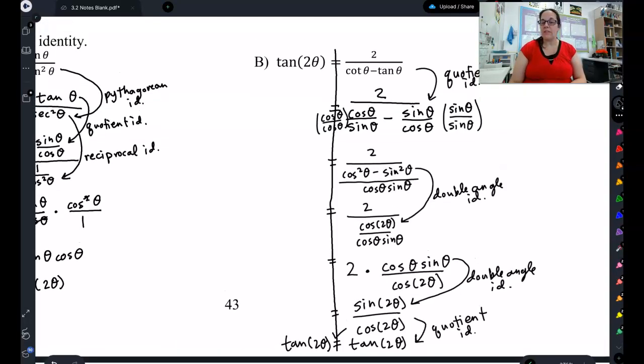So there's another example of a trig identity. In the next video, we're going to move on from double angle identities and start to look at some new identities.